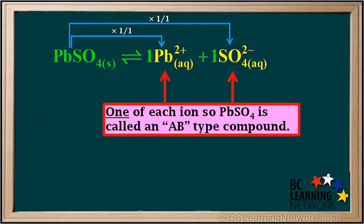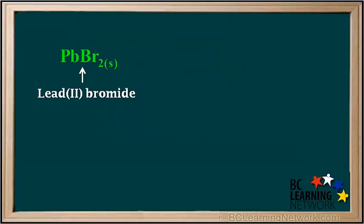Because the salt PbSO4 dissociates to produce one cation and one anion — one of each ion — we call it an AB type compound. In AB, there is one A and one B.